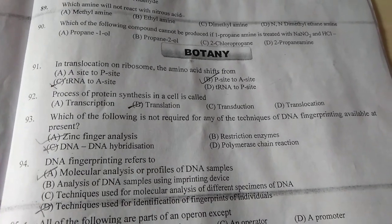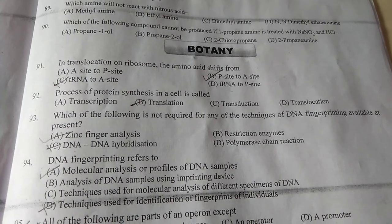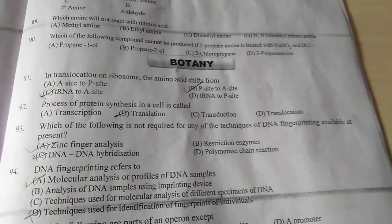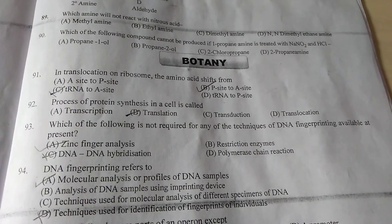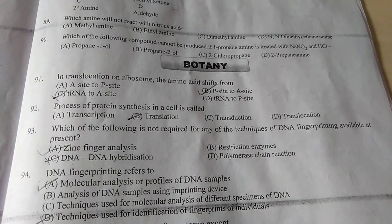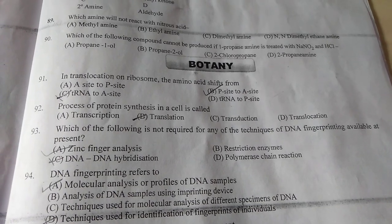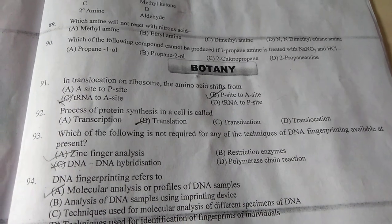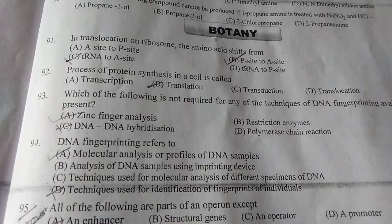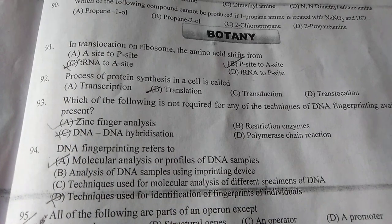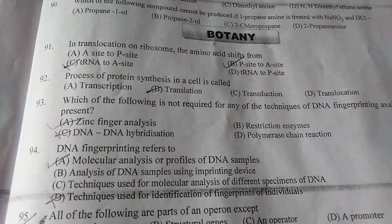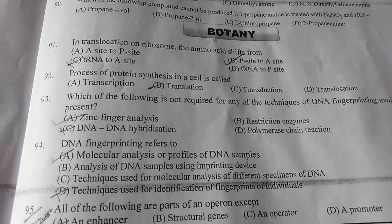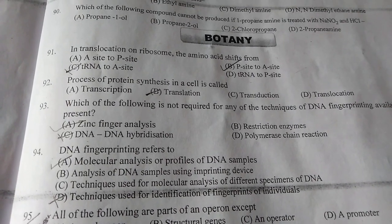Question number 93: Which of the following is not required for any of the techniques of DNA fingerprinting available at present? We have four answers, and the correct answer is A — zinc finger analysis. Question number 94: DNA fingerprinting refers to — A is the correct answer — molecular analysis or profiles of DNA samples.